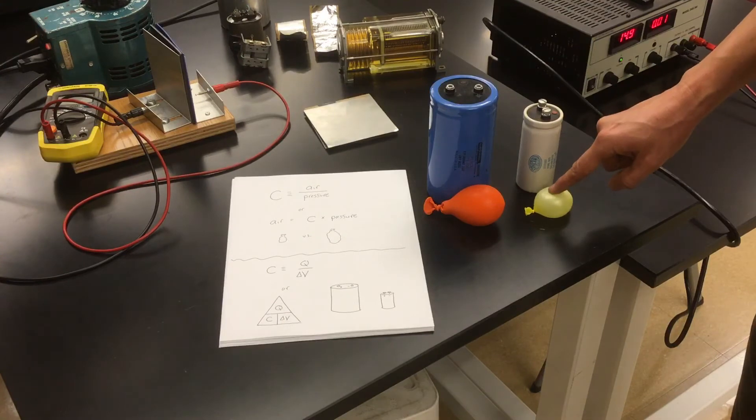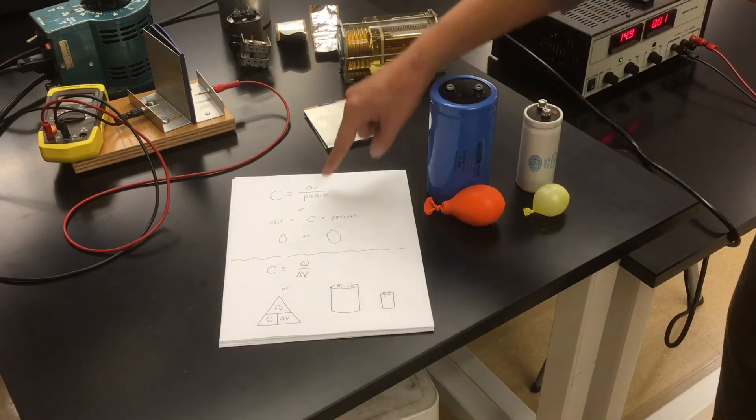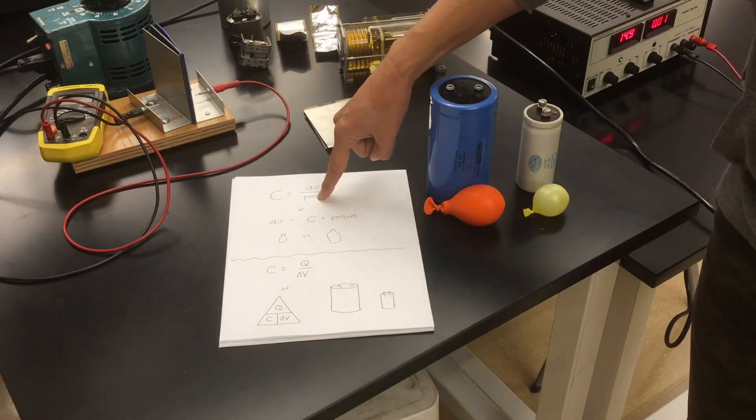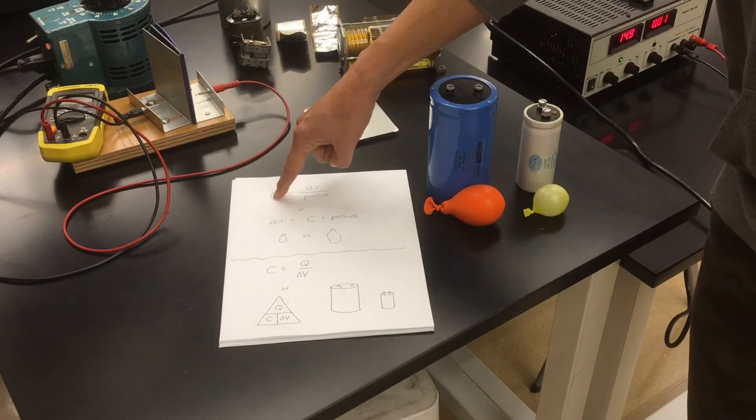This yellow one holds the same amount of air as the orange one, but I had to apply a bigger pressure to make it do that. So it has a lower capacitance.